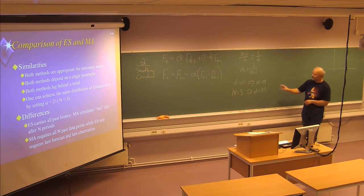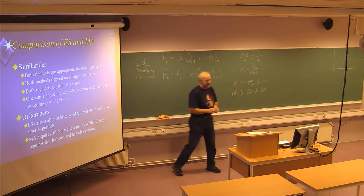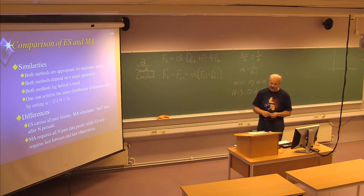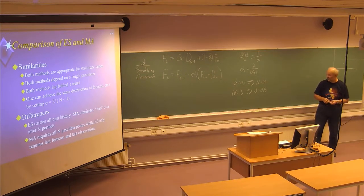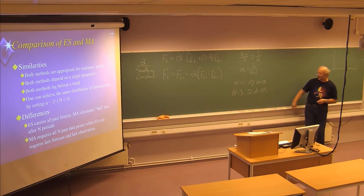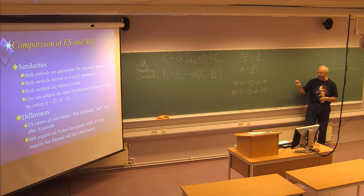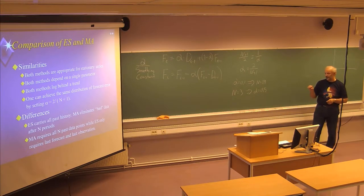This combination of parameter values between the different methods is the situation where both methods would have the same distribution of forecast errors. But this doesn't mean they will give exactly the same forecast. The methods are different and will give different forecasts, but when this situation appears, you can actually compare the methods because they will have the same distribution of forecast error.